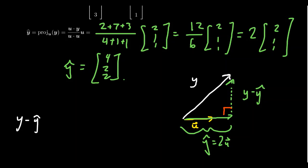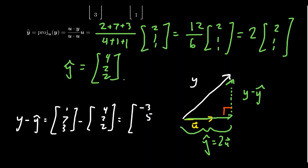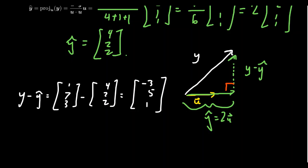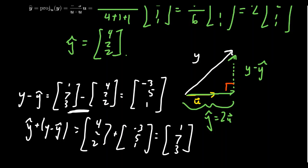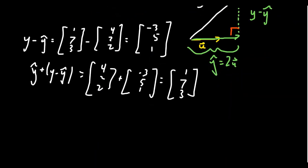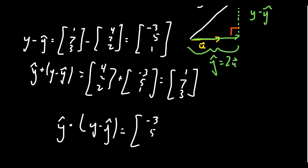Computing y minus y-hat: y = [1, 7, 3] minus y-hat = [4, 2, 2] gives us [-3, 5, 1]. It's clear that y-hat plus (y minus y-hat) = [4,2,2] + [-3,5,1] = [1,7,3] = y, as expected. Now the interesting part: taking the dot product of y-hat with (y minus y-hat).